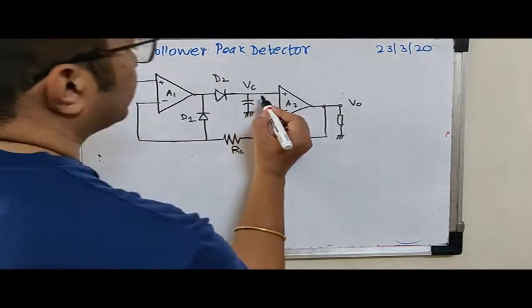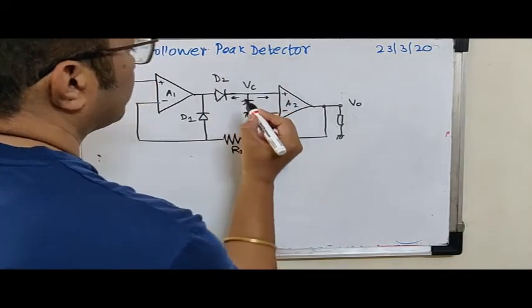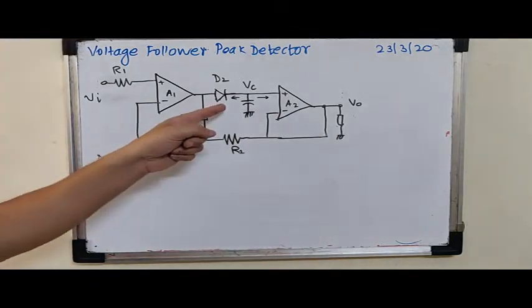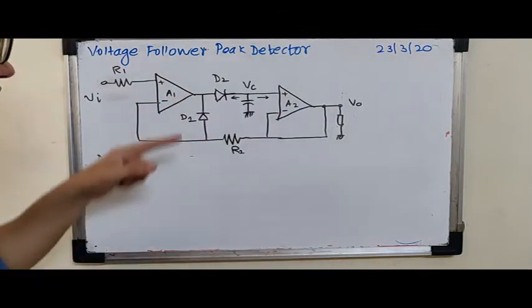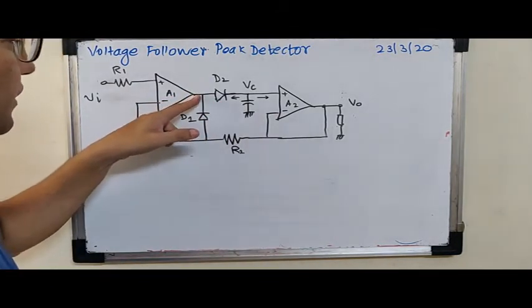At the same time, there are only two discharge paths, this one and this one. Maximally speaking, specifically when A1 is having a low value over here and